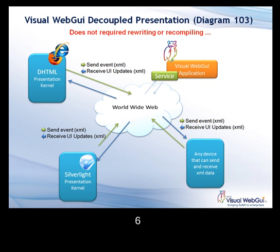Visual Web GUI basically decouples the presentation rendering or view from the actual UI logic. It coordinates the view state via a proprietary XML protocol, which sends events from the client to the server and receives incremental optimized UI updates. Visual Web GUI's initial presentation layer is the DHTML presentation kernel. We will soon release the Silverlight presentation kernel as well.